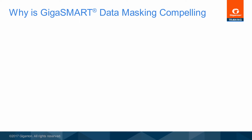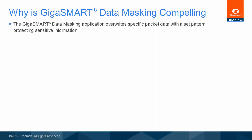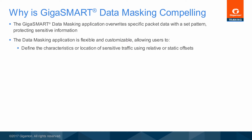GigaSmart data masking can mitigate or eliminate the risk represented by packet analysis. The data masking application lets users overwrite specific packet data with a configurable data pattern so that sensitive information is protected during network monitoring and traffic storage. Since the data masking application is flexible and customizable, users are able to define the characteristics or location of sensitive traffic within relative offsets from various protocols, or with static offset from the start of the packet.